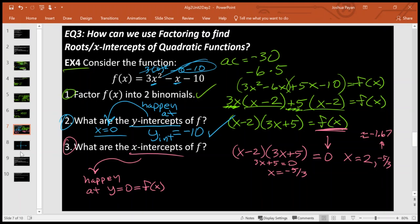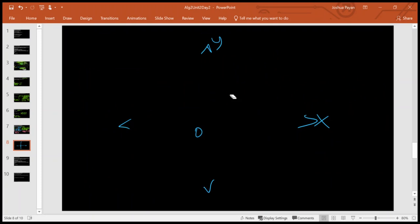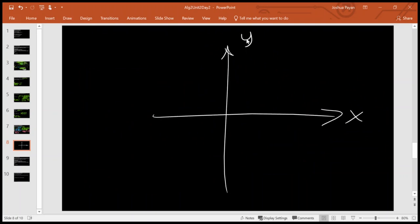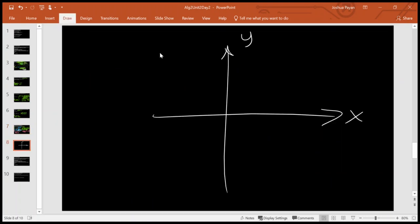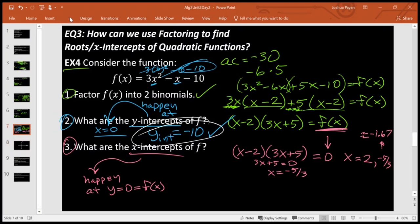Alright, so now let's use that to draw this picture. So I'm going to go ahead and write down my key numbers. There's x, here's y. And we know that we have a y-intercept at y is negative 10. So let's go ahead and say negative 10 is down here, and that's where we touch the y-axis.